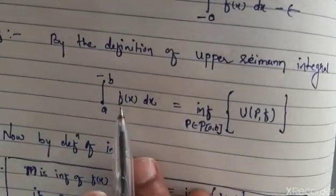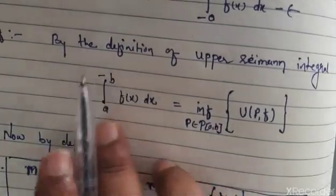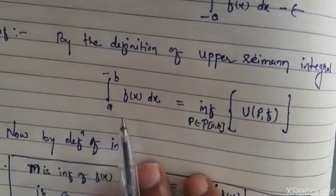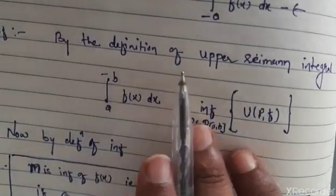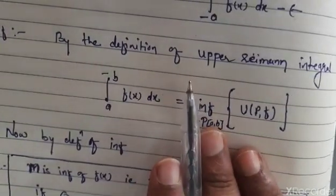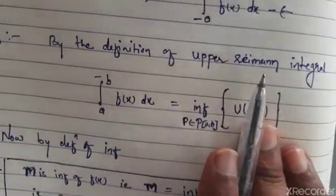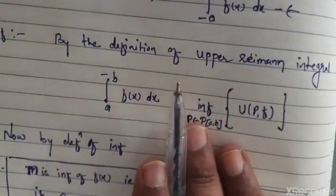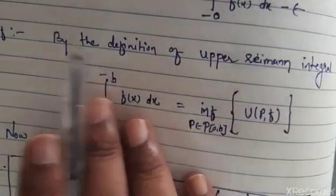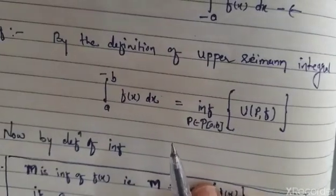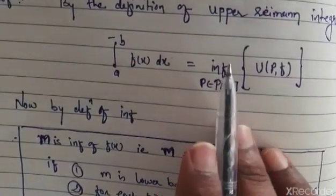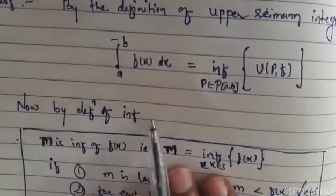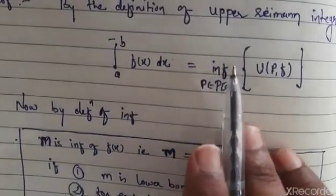Now we have to see that the upper Riemann sum relates to the infimum in the upper Riemann integral. We have to write this using the definition of infimum — the proof using infimum is very valuable here.